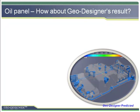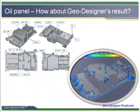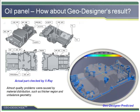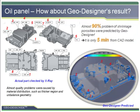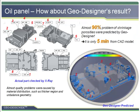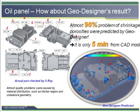The problems existing today are just the porosity problems. Let's make a comparison of the analysis result of GeoDesigner and the actual casting result obtained by X-Ray. We can find almost 90% of shrinkage porosity problems were predicted, both the location and size. Most interestingly, GeoDesigner only takes 5 minutes to get such a result from a CAD geometry.